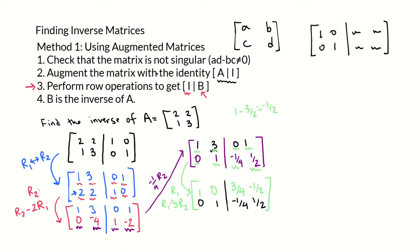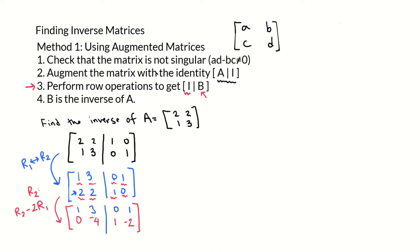Now we have step 3 completed. We've used row operations to get the identity on the left, and some other matrix on the right side. We'll call that matrix B. So B is three-fourths, negative one-half, negative one-fourth, and one-half — a 2 by 2 matrix. That matrix B is the inverse of A. This first method uses augmented matrices and row operations to get the inverse matrix B. Now we're going to take that same matrix A and find the inverse a different way.